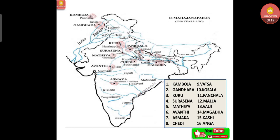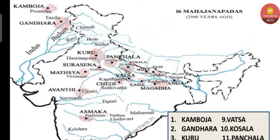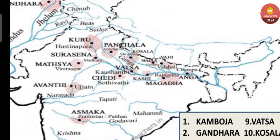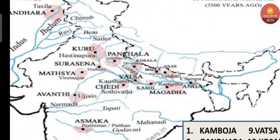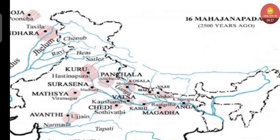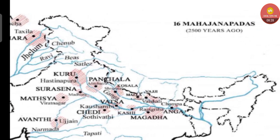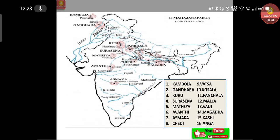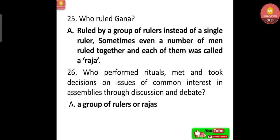On the map, you can clearly see Vajji to the north of Magadha. Map understanding is very important to answer all the questions.